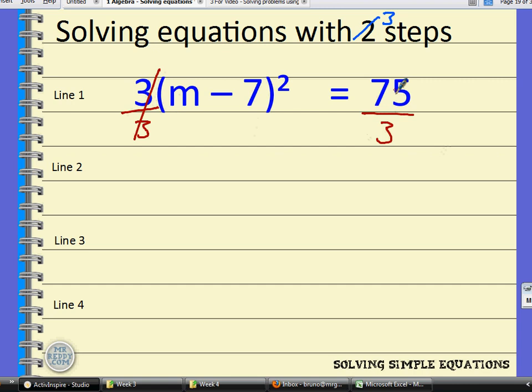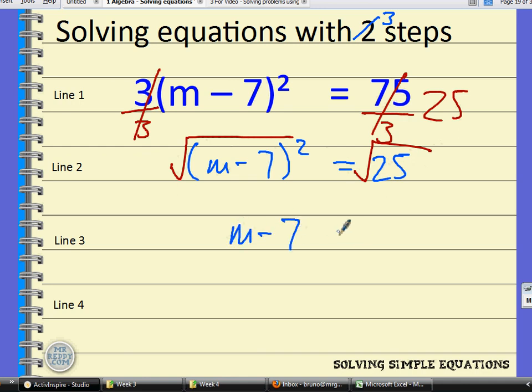Divide both sides by 3, that cancels out, and that becomes 25. 75 divided by 3 is 25. So what have we got left? We've got the equals sign, we've got m take away 7 squared, and over here we've got 25. What's next? Square root, we need to square root both sides. And what have you got? That leaves you with m take away 7 here equals the square root of 25, which is 5.